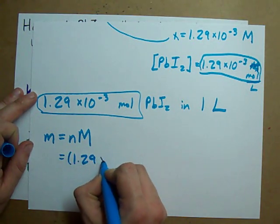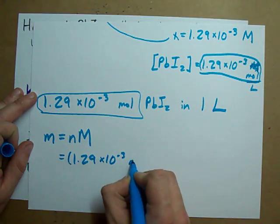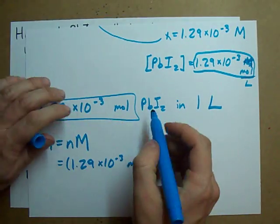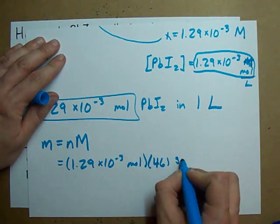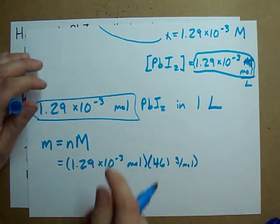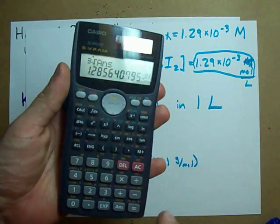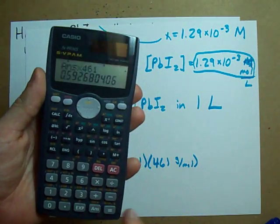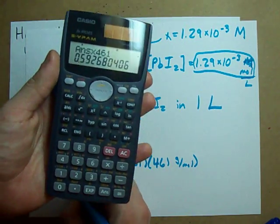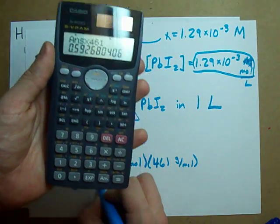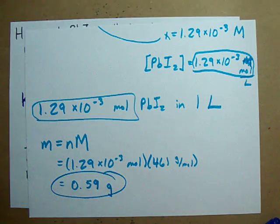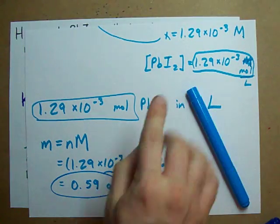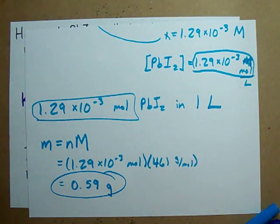So I'm going to: 1.29 times 10 to the minus 3 moles. The molar mass of PbI2 is approximately 461 grams per mole. And when I multiply those two numbers, I end up with 0.59 grams. I can dissolve that much PbI2 in a liter of water. Best of luck in your own saturation concentration calculations.